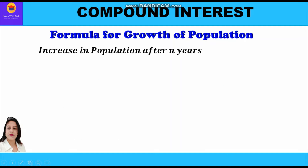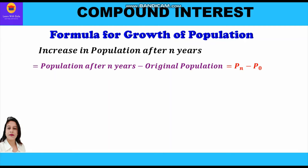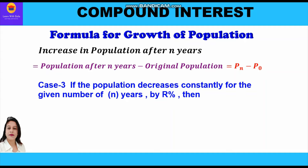Now if we have to find the increase in population after n years, we shall use the formula: population after n years minus original population, that is Pn − P0. Since the population after n years will be more than the original population, we subtract the original population from the population after n years.